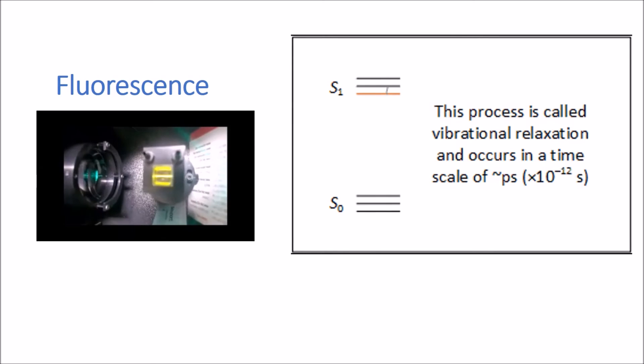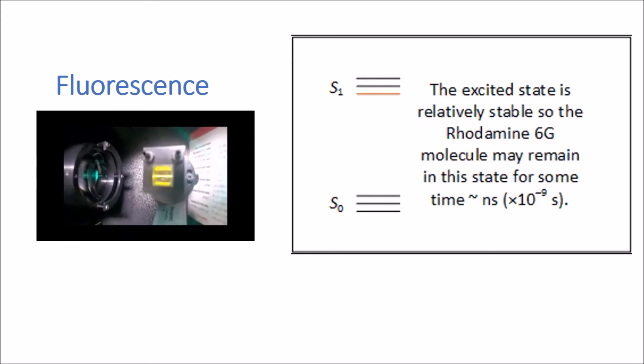The difference in wavelength is known as the Stokes shift. Vibrational relaxation occurs within a timescale of about a picosecond. That's 1 times 10 to the minus 12 seconds.